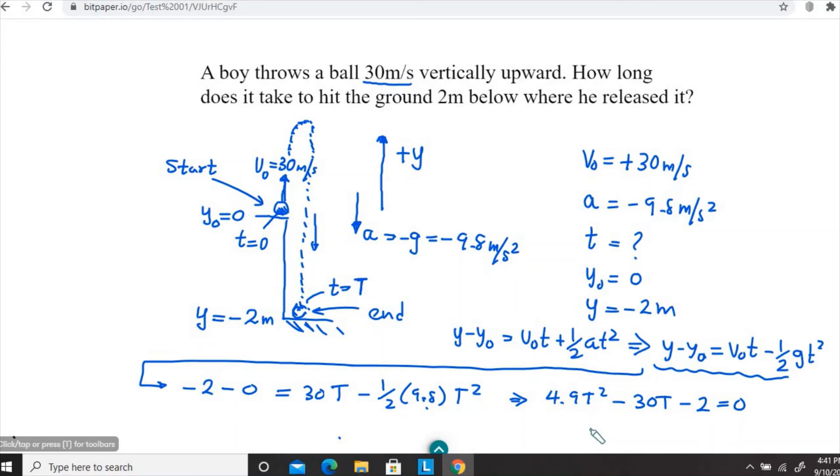The projectile goes up, it takes time, then hits the maximum height where velocity becomes zero, turns around and falls down. We measure the time, t equals uppercase T, and that's what we need to find out.